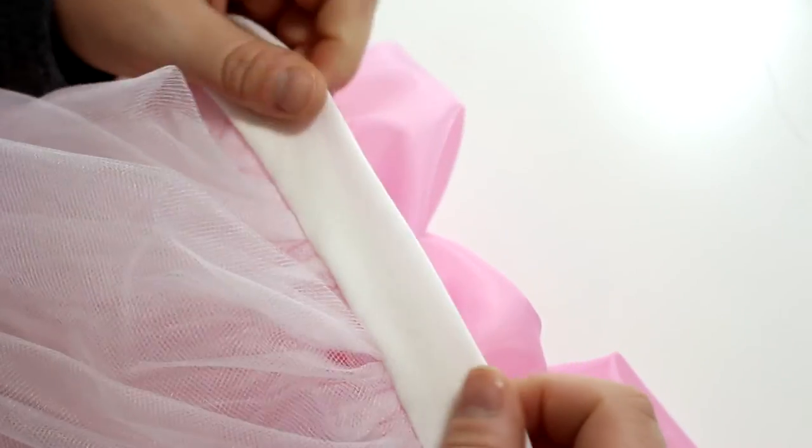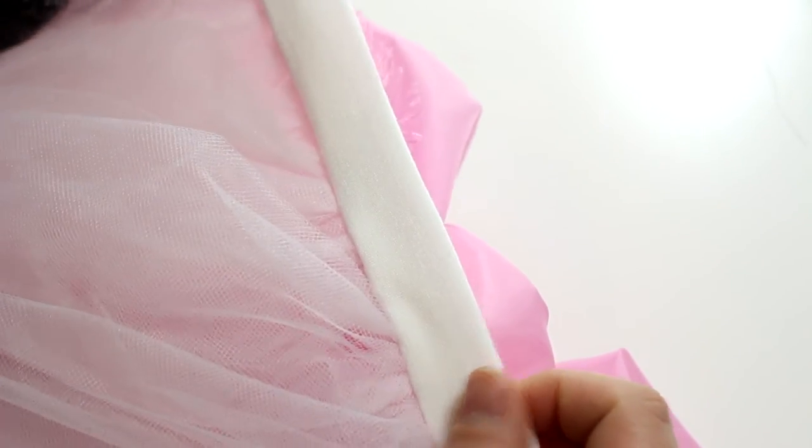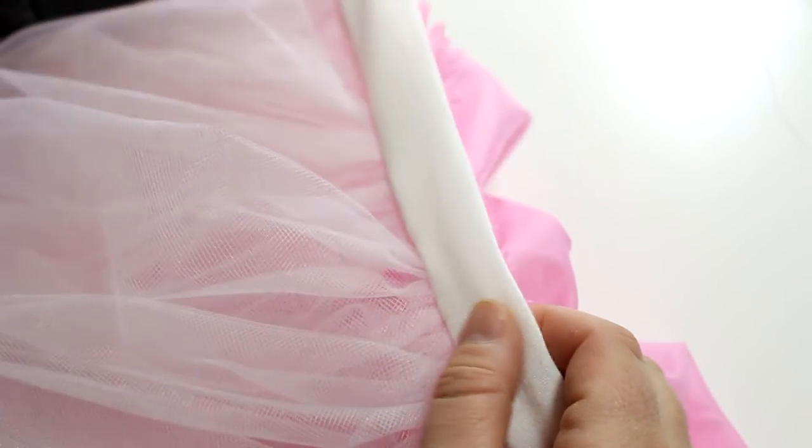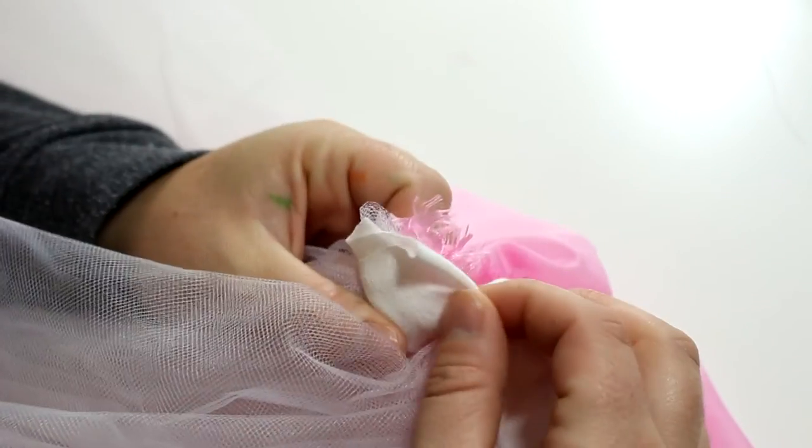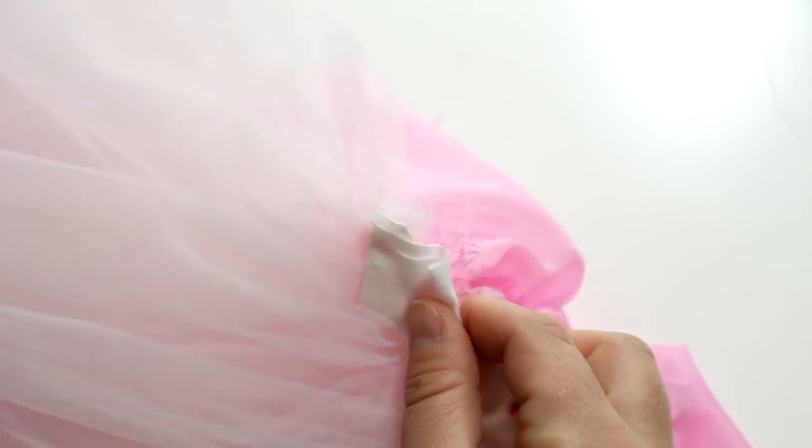Of course there will be open tulle in the back, but unless you want to do a zigzag stitch and bring the tulle together, you can do that. You can leave it open. There's so much tulle that you're not going to really notice it much. Or you could just sew the lining together just so that you don't have people looking at your legs.